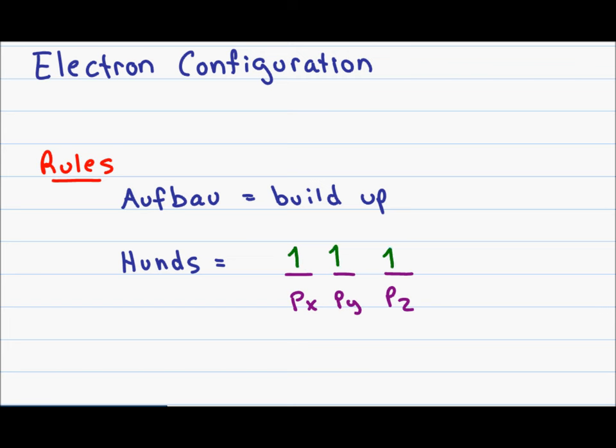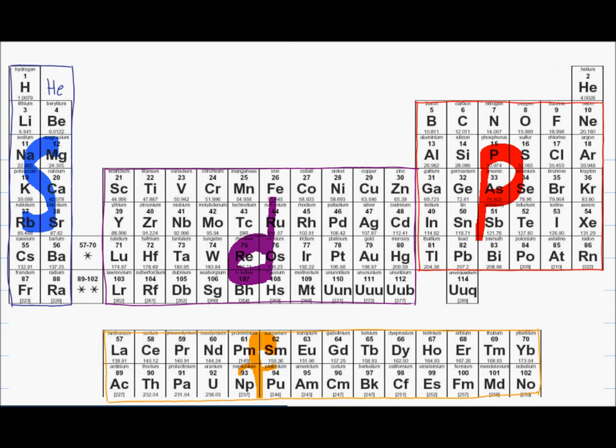And finally we have the Pauli exclusion principle, and what this says is that no two electrons can have the same exact address between their principal energy level, orbital, sub-orbital, or up and down spin. At least one of these factors has to be different to ensure that the two electrons are not located in the same space. Now let's see how this applies on the table.